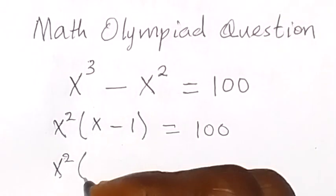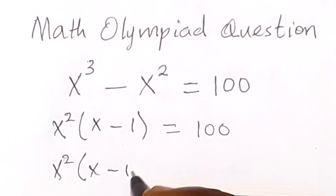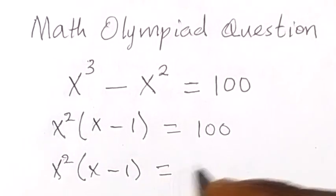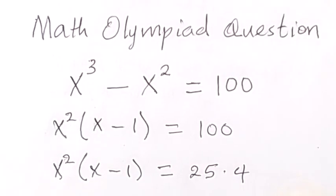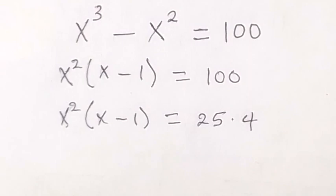x squared into bracket x minus 1, then equals to we can write our 100 as 25 times 4.